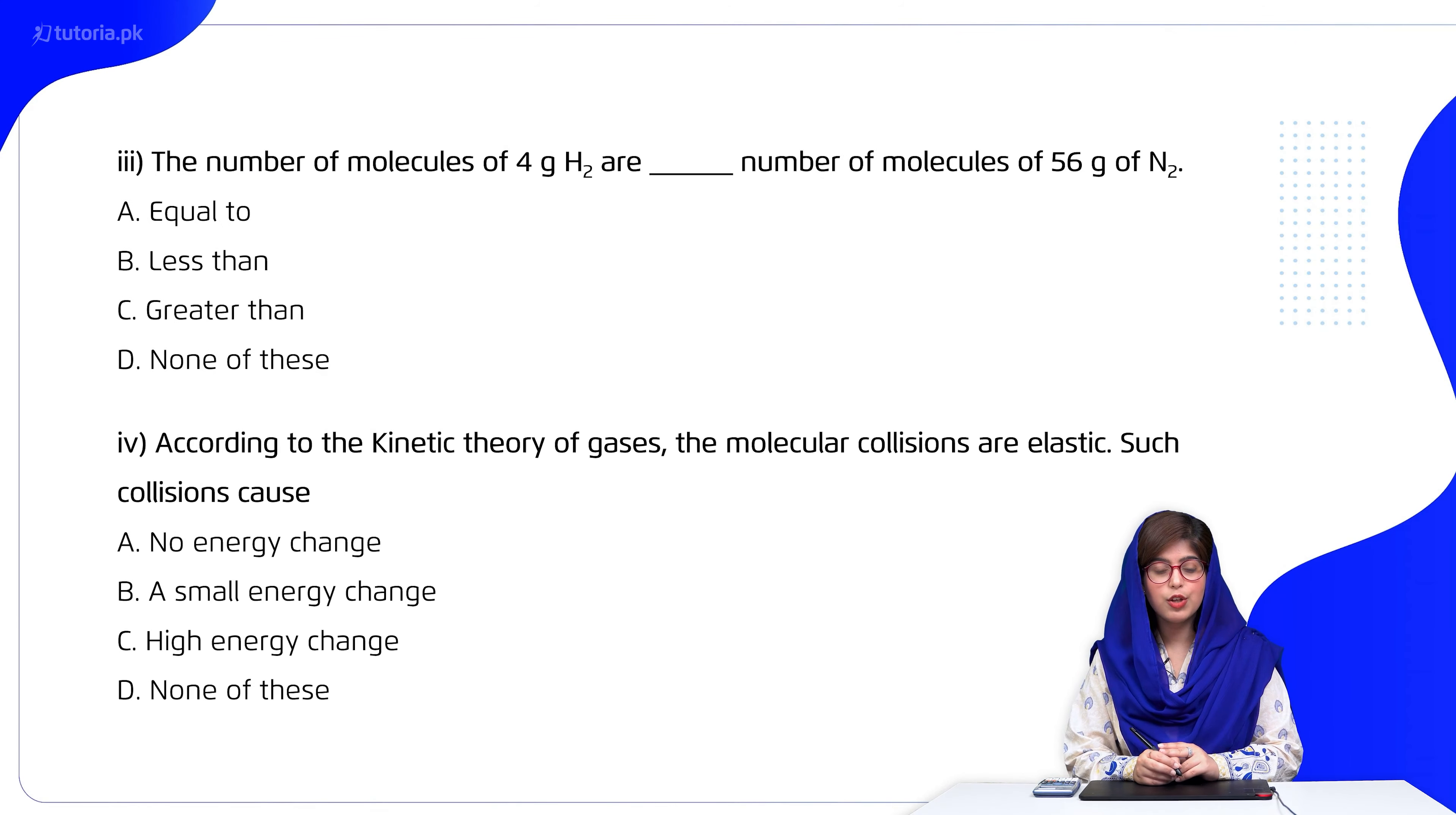Number three: the number of molecules of 4 grams of hydrogen are dash number of molecules of 56 grams of nitrogen. Equal to, less than, greater than, none of these. So students, we will calculate. If you calculate moles, mass in grams divided by molar mass. Remember 2.0, we will take this. So two ones are two and two twos are four, and two moles of hydrogen.